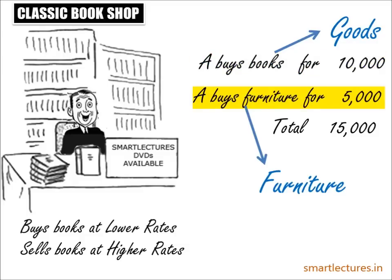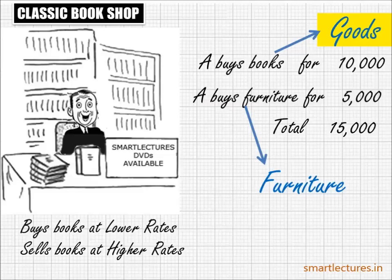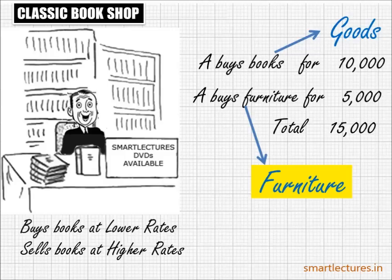So books will be called goods and furniture will be called furniture. This is the difference between goods and other items.